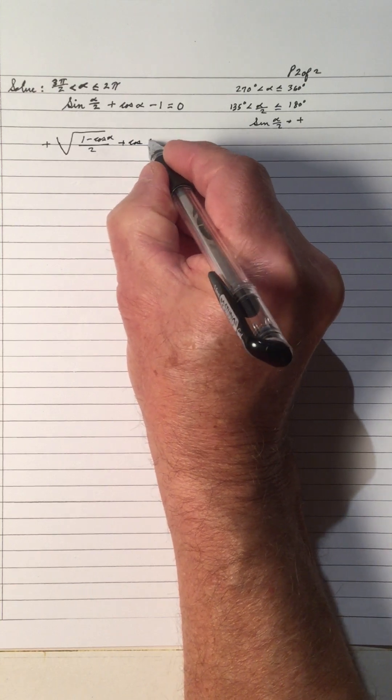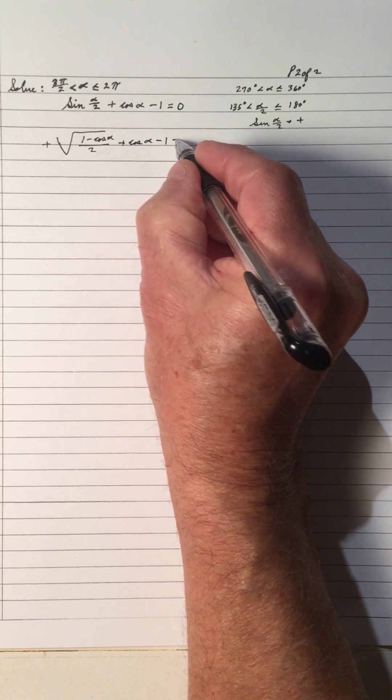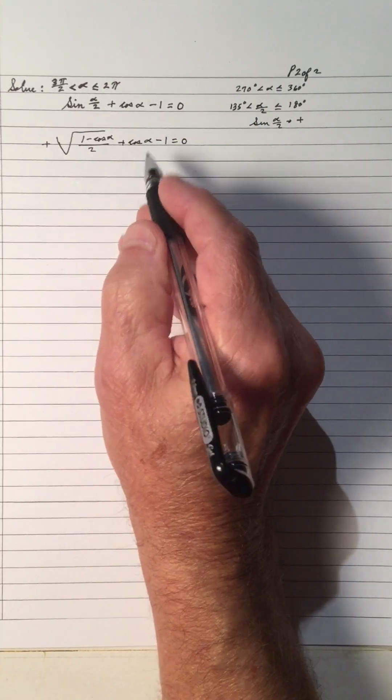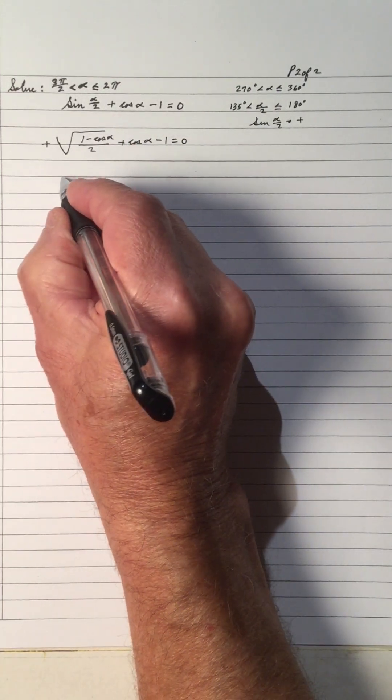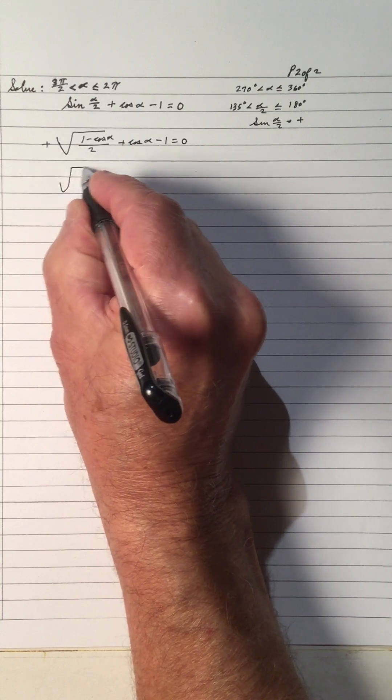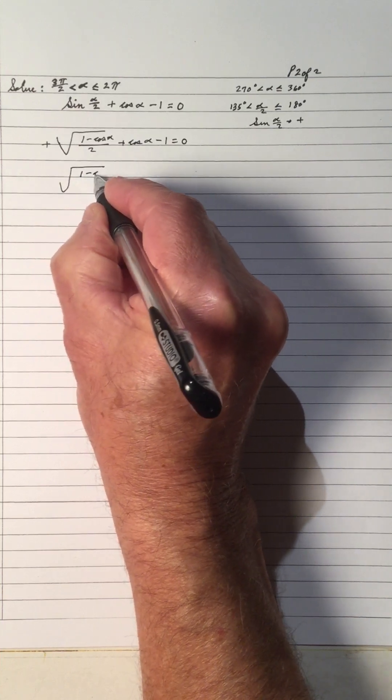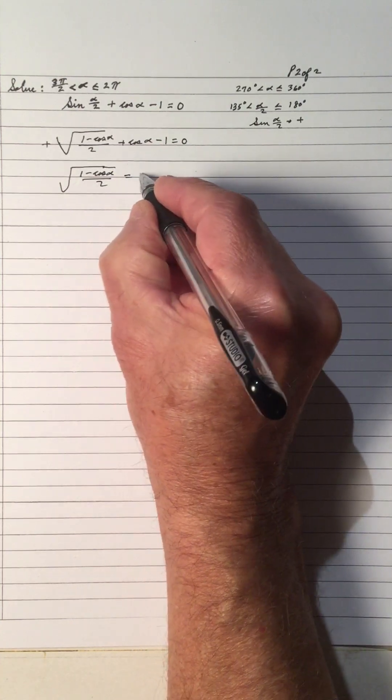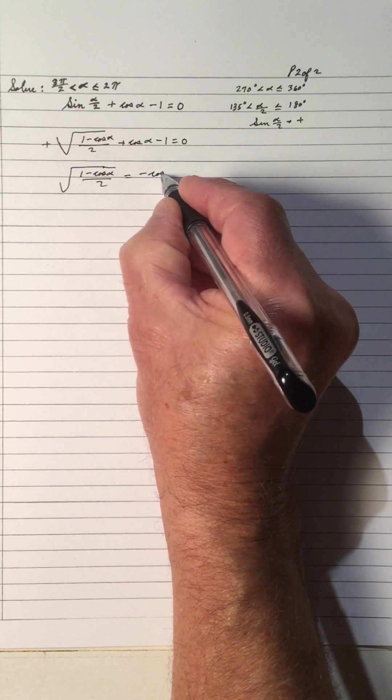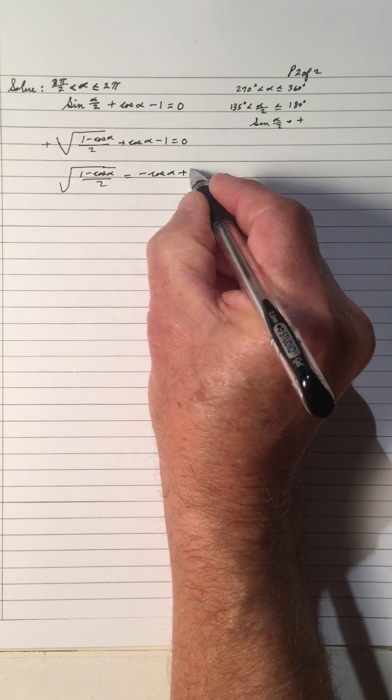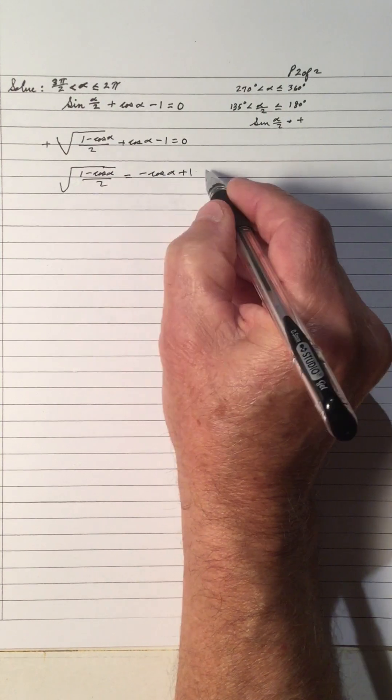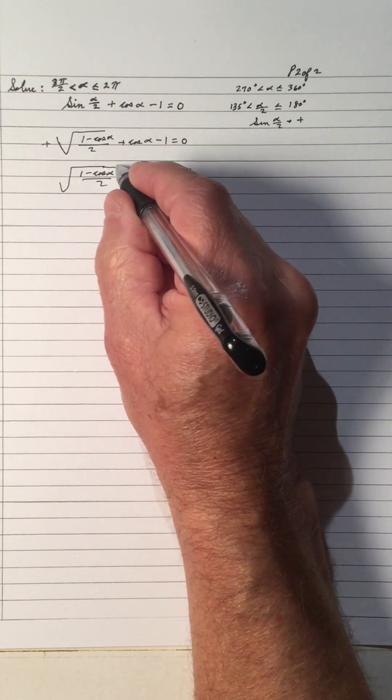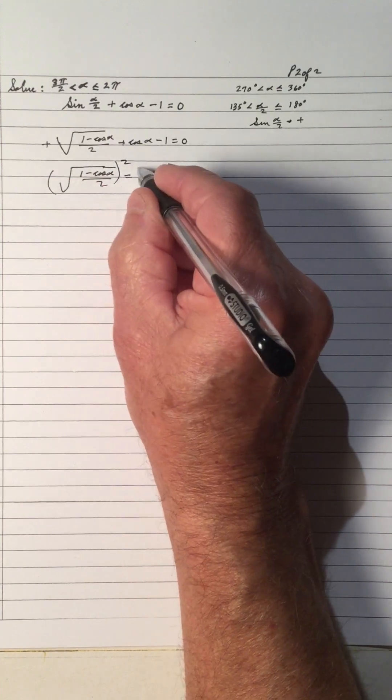And we do cos(α) - 1 = 0. So we have a square root here. What we'll do is isolate the square root. So we'll do sqrt((1 - cos α)/2) = -cos α + 1. Move the cos and the 1 to the right side and change the signs.